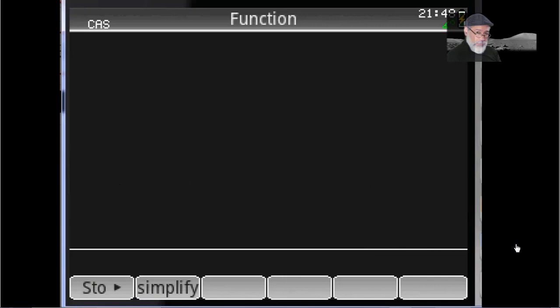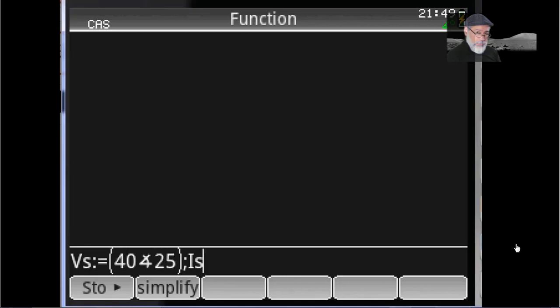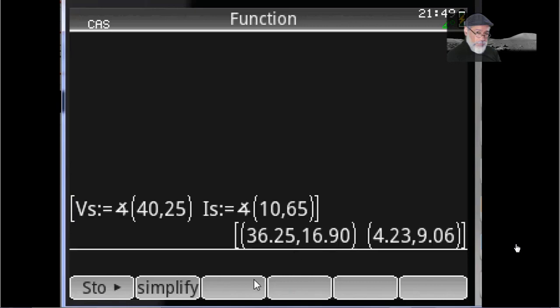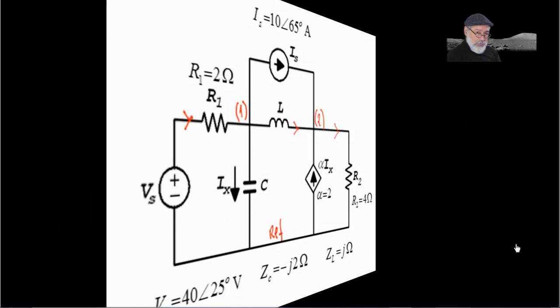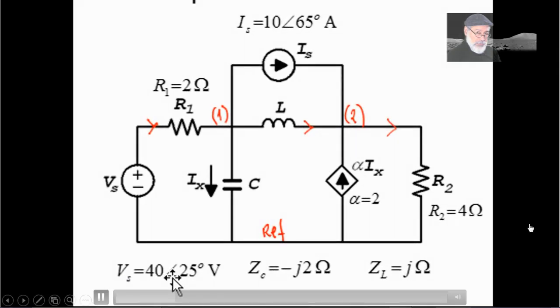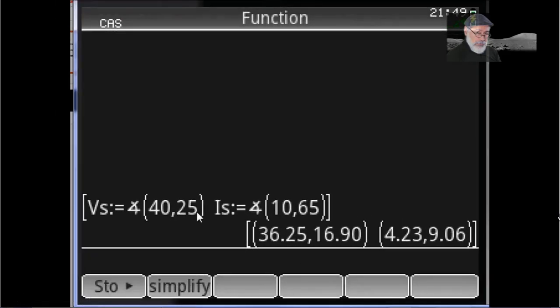Now we're ready. We begin establishing what are the values of the sources. Vs is 40 volts with 25 degrees, and the current source was 10 amps with 65 degrees. How do I know it's degrees? Because the calculator is in degrees on the top. Check. Vs is 40 25, Is is 10 65. Let's go back.